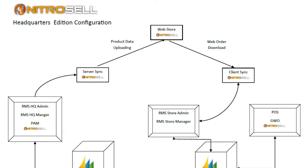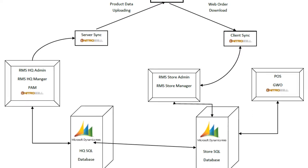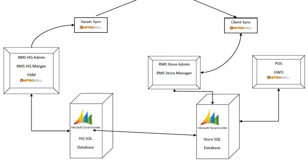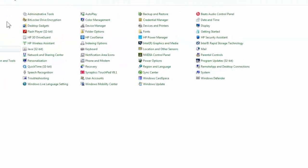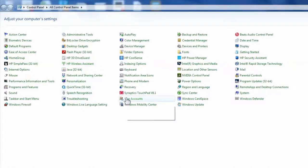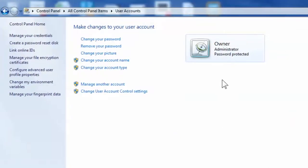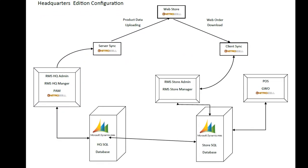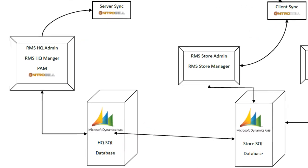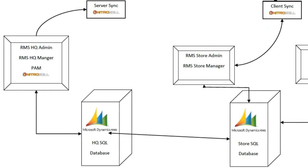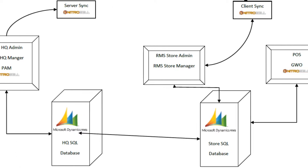All NitroCell software relies on its ability to connect to your server and RMS HQ and store databases, respectively. To establish that connection, the software must be installed while logged into the local computer and local area network with top administrative rights, allowing both the reading and writing of information to your databases. There must also be installations of RMS HQ Administrator and Manager, where PAM and Server Sync are installed, and RMS Store Administrator and Manager, where Client Sync is installed.